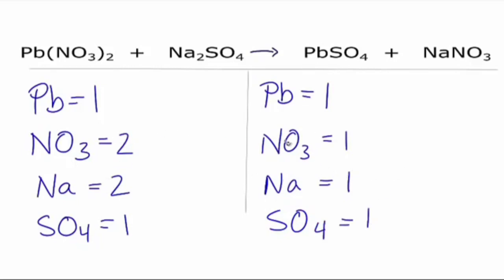Let's fix the Na. If we put two in front, this one times the two gives us two. That would balance the Na's. And this two applies to everything here, so for the NO3, I have the one times the two, that will give me two as well. And this equation is balanced.